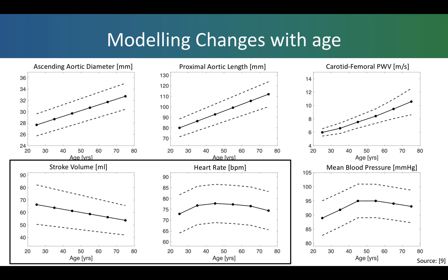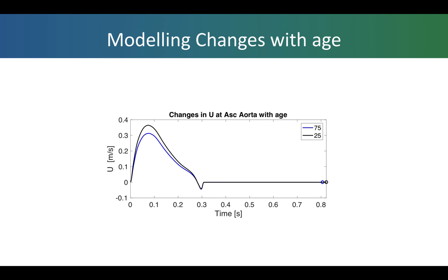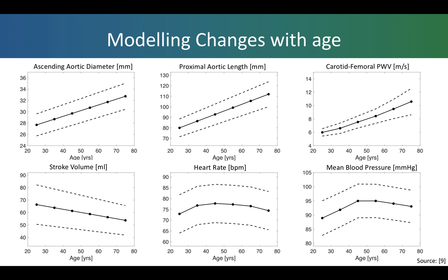Cardiac properties were prescribed to the model by adjusting the inflow waveform. Here the waves used for the 25 and 75 year old models are shown, the 25 year old having a larger stroke volume. Normal variation in parameters within age groups were modelled by varying parameters by half and one standard deviation from the age-specific mean.